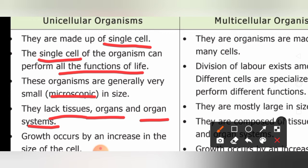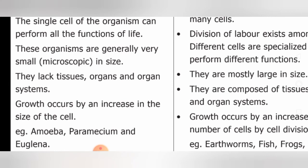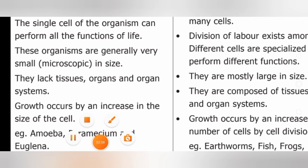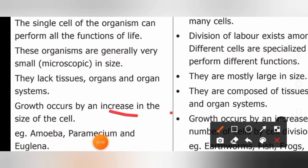The growth in unicellular organisms occurs by an increase in the size of the cell — if the size of the cell increases, the organism grows. Increase in the size of the cell gives growth to the unicellular organism. Examples are amoeba, paramecium, and euglena.